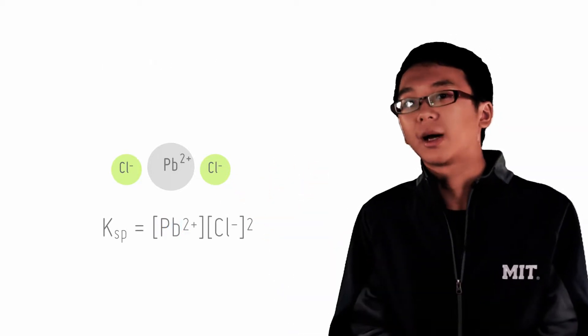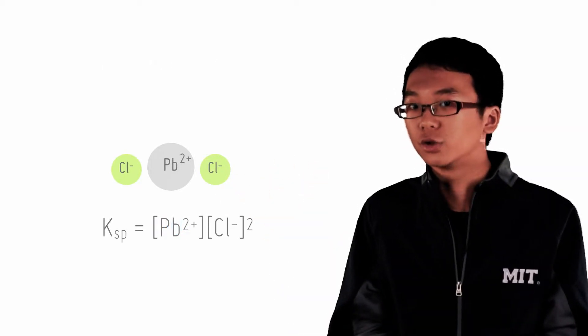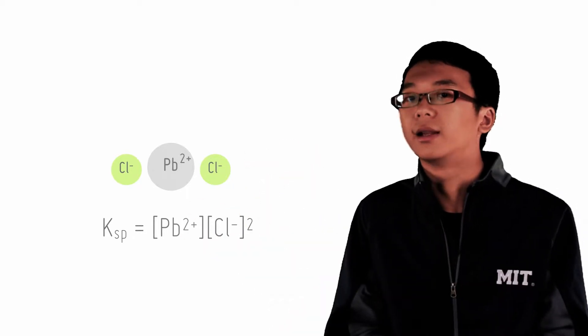There are chloride ions in the solution, which by Le Chatelier's principle pushes the dissolution of lead chloride backwards, making it more insoluble than it already is.